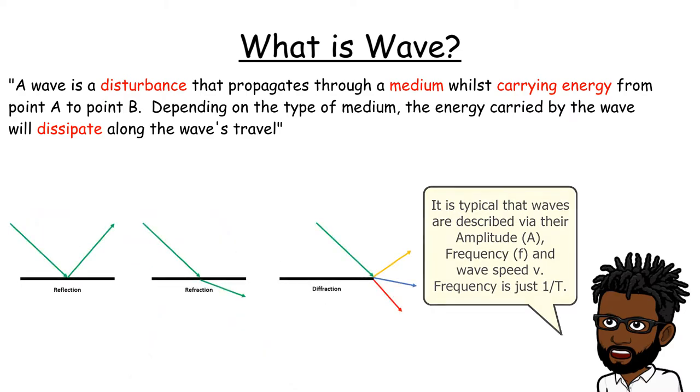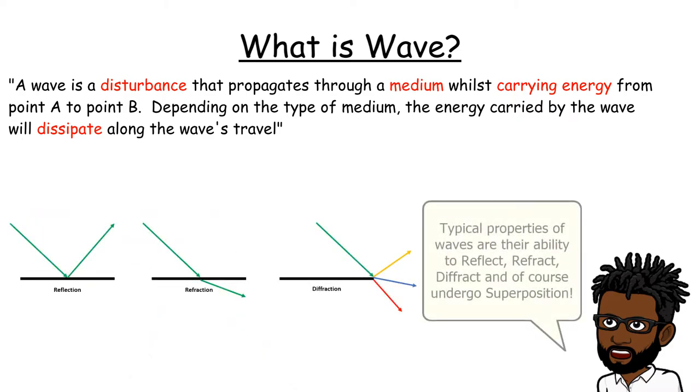Typical wave behaviours are reflection, refraction and diffraction, which basically describes the behaviour of waves on solid objects, and of course, superposition.